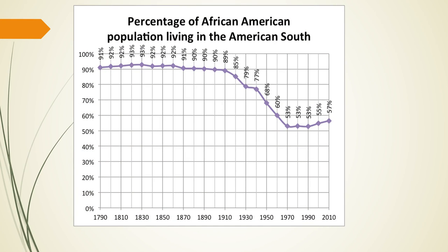Data illustrates the Great Migration clearly: from 1790 to 1910 — 120 years — approximately 90% of African Americans lived in the South. From roughly 1910 to 1950, that share dropped from 89% to 68%. This reflects the Great Migration driven by people fleeing the South, with a small impact from World War I defense jobs, more from escaping the Great Depression, and especially from World War II urban employment opportunities.